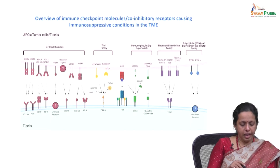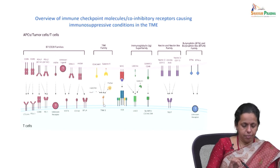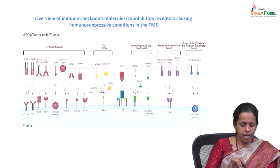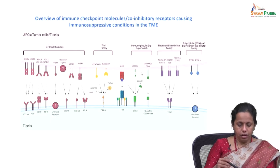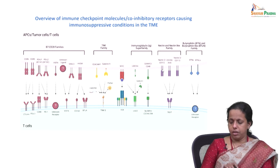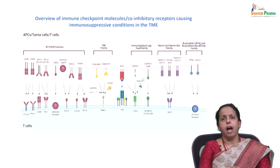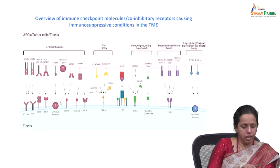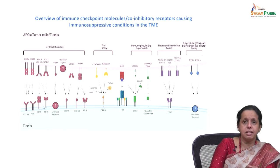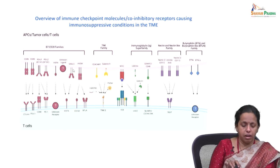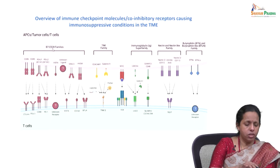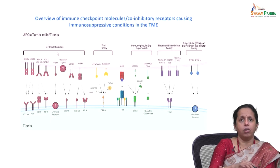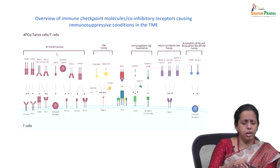Different immune checkpoint molecules are expressed on T cells, and these molecules are shown along with their ligands expressed on antigen presenting cells, tumor cells, or T cells, which trigger co-inhibitory signals.